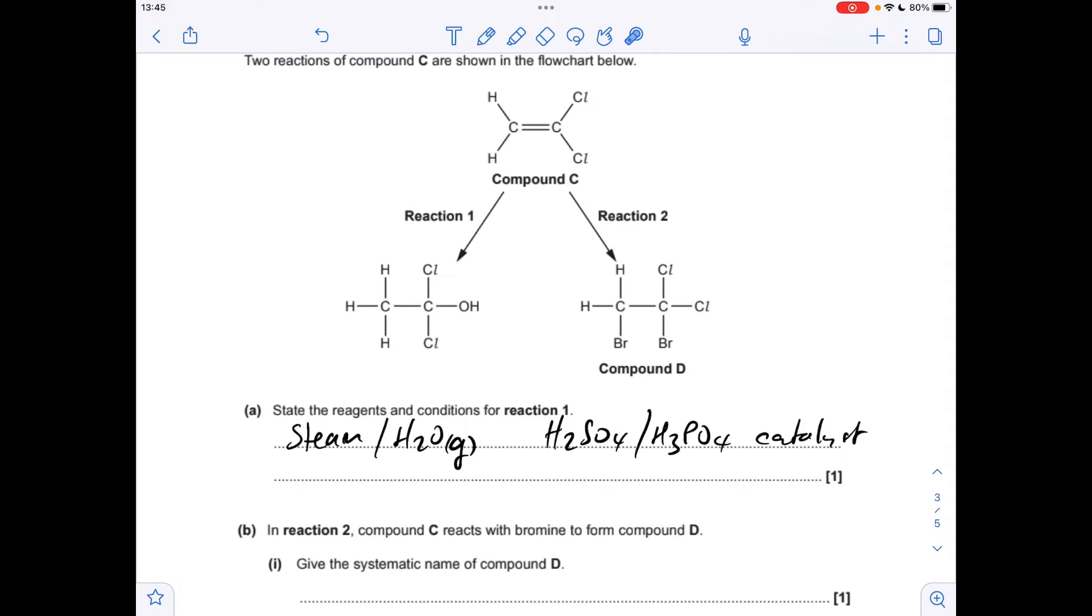So we've obviously got to go on the lowest numbers. So it's 1, 2, dibromo, 1, 1, dichloroethane.